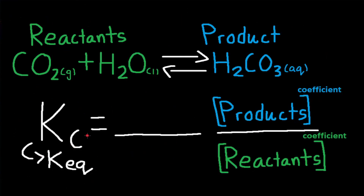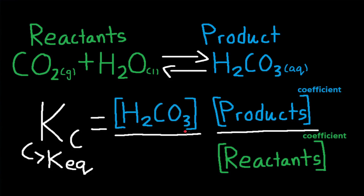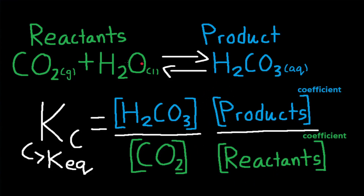For this reaction, the equilibrium constant Kc or Kaq is equal to the concentration of H2CO3 divided by the concentration of CO2 — products divided by reactants. They both have no coefficients, so they have no exponents. Technically they have a coefficient of 1, but that means an exponent of 1, so we don't need to include that. H2O is not included because it is a liquid; liquids have constant concentrations throughout the equilibrium reaction, so we don't need to include them in Kc or Kaq.